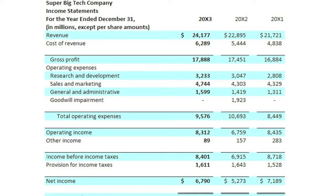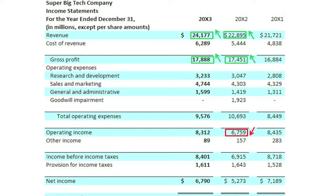Maybe you learned that from 20x1 to 20x2, SBTC's revenues and gross profits grew, but its operating income declined. This is unusual. Then, from 20x2 to 20x3, its revenues and gross profits grew again, but this time its operating income also grew. What caused the operating income decline in 20x2 and the increase in 20x3?